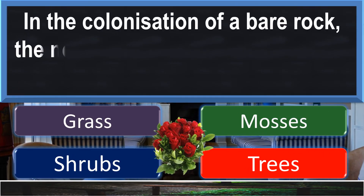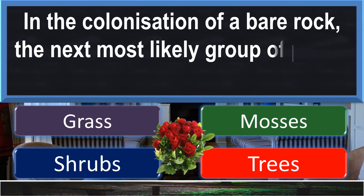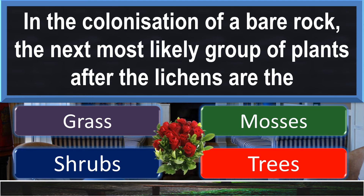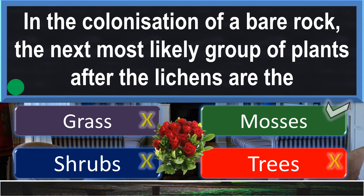In the colonization of a bare rock, the next most likely group of plants after the lichens are the mosses.